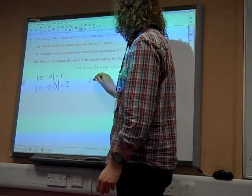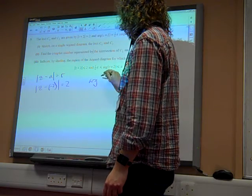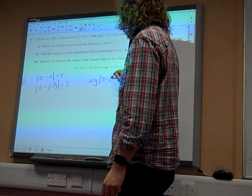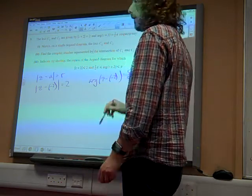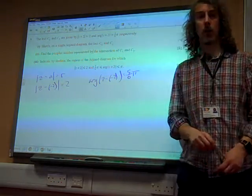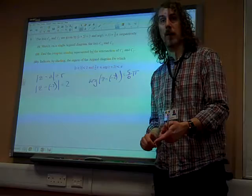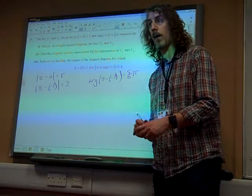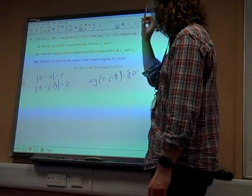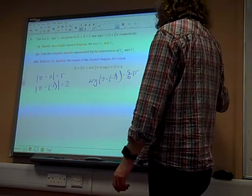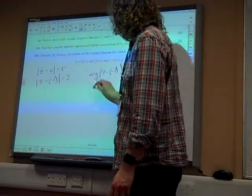And we've also got that the argument of z minus minus 2 is 5 sixths of π. 5 sixths of π, of course, is an obtuse angle, isn't it? It's almost all the way round to π, so we need to be careful how we draw that one as well.